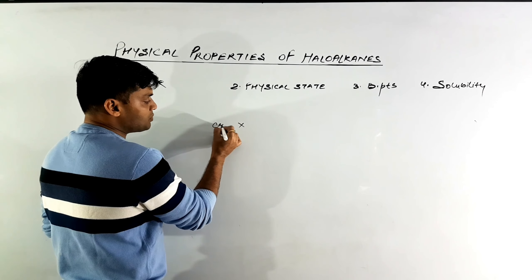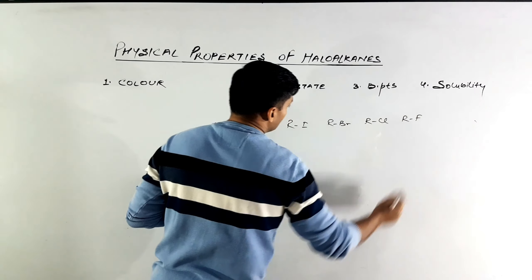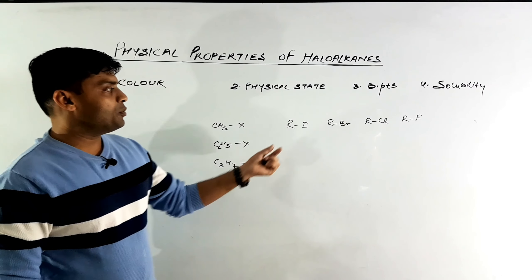Let's start with the color of alkyl halides. It has been observed that all 4 types of alkyl halides — fluorides, chlorides, bromides, and iodides — in their purest form are colorless compounds. Among these 4, the bromides and iodides in purest form are also colorless.